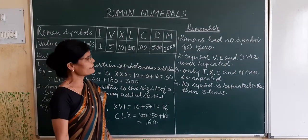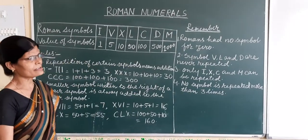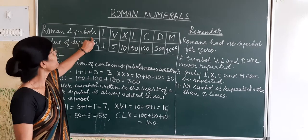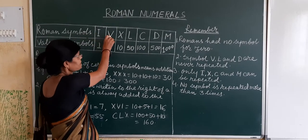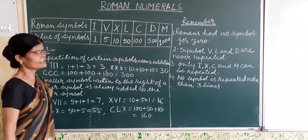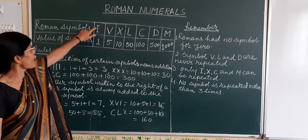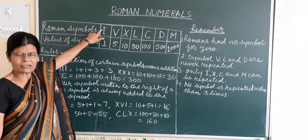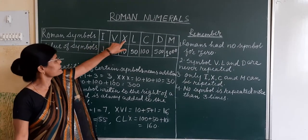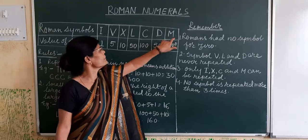In ancient Rome, they used 7 symbols. These are called Roman symbols: I, V, X, L, C, D, and M. The value of I in the Hindu-Arabian number is 1. V stands for 5, X stands for 10, L for 50, C for 100, D for 500, and M for 1000.